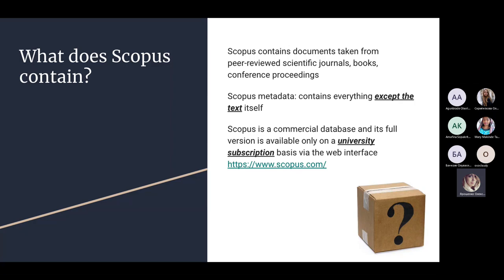How do documents get uploaded into Scopus? You have to be published in a journal that is indexed in Scopus. A journal can apply for indexing in Scopus, but that is work the journal's editorial board must do. As an author, you cannot change the situation other than selecting a journal that is indexed in Scopus. You cannot apply for being indexed in Scopus as an author — you can only be published in a journal that is already indexed.